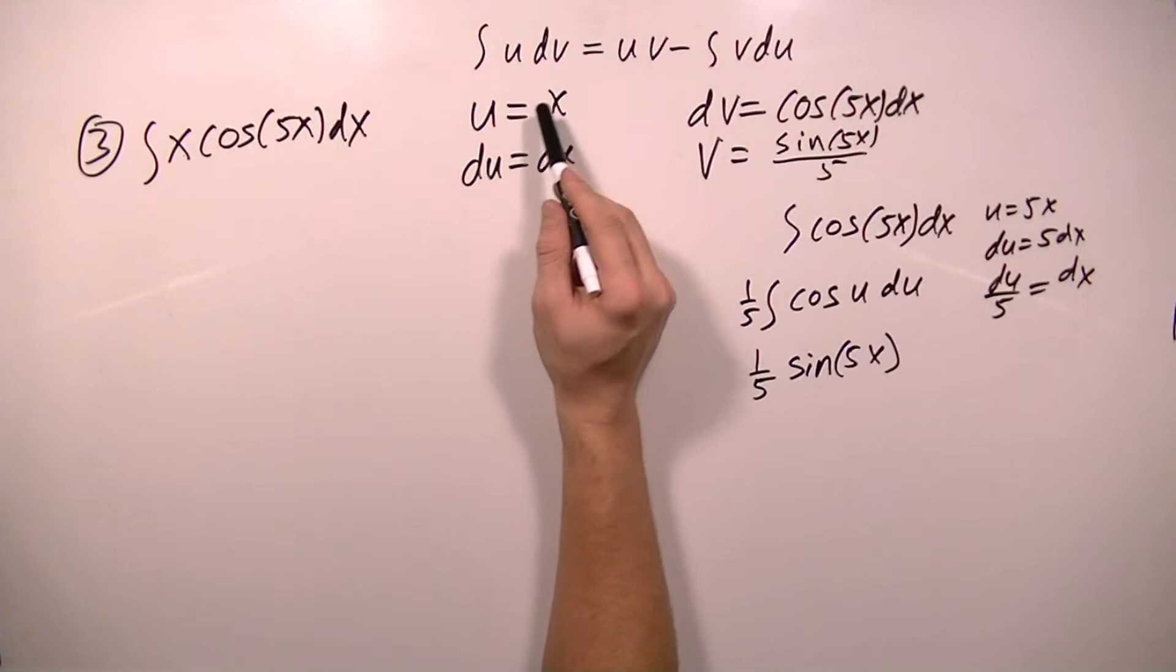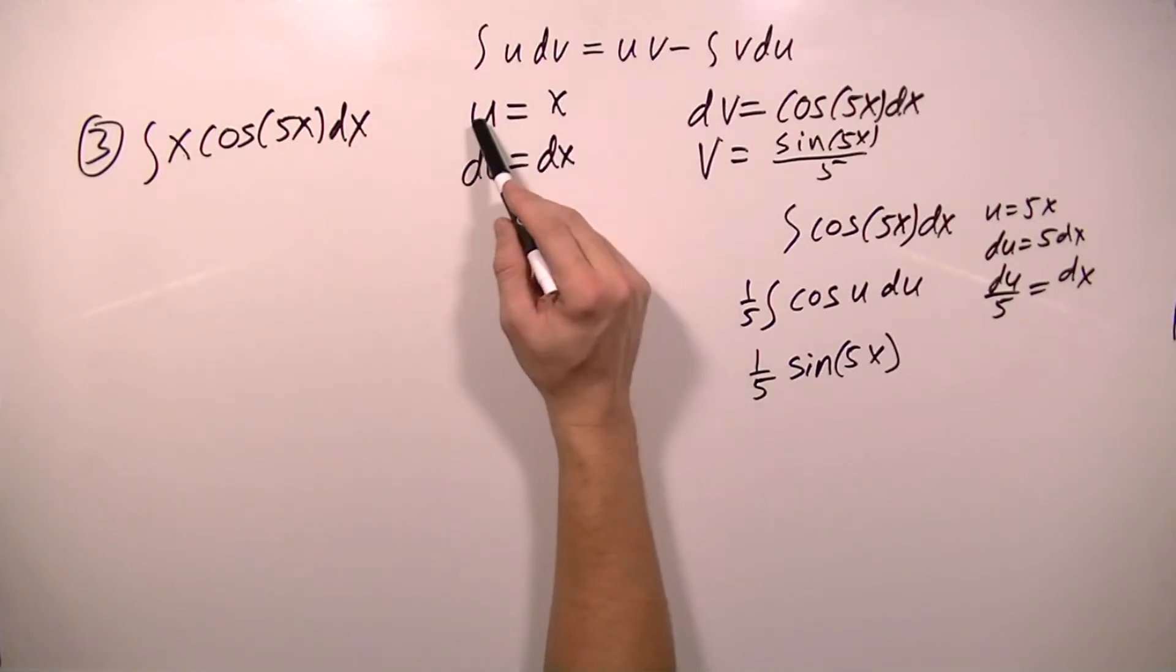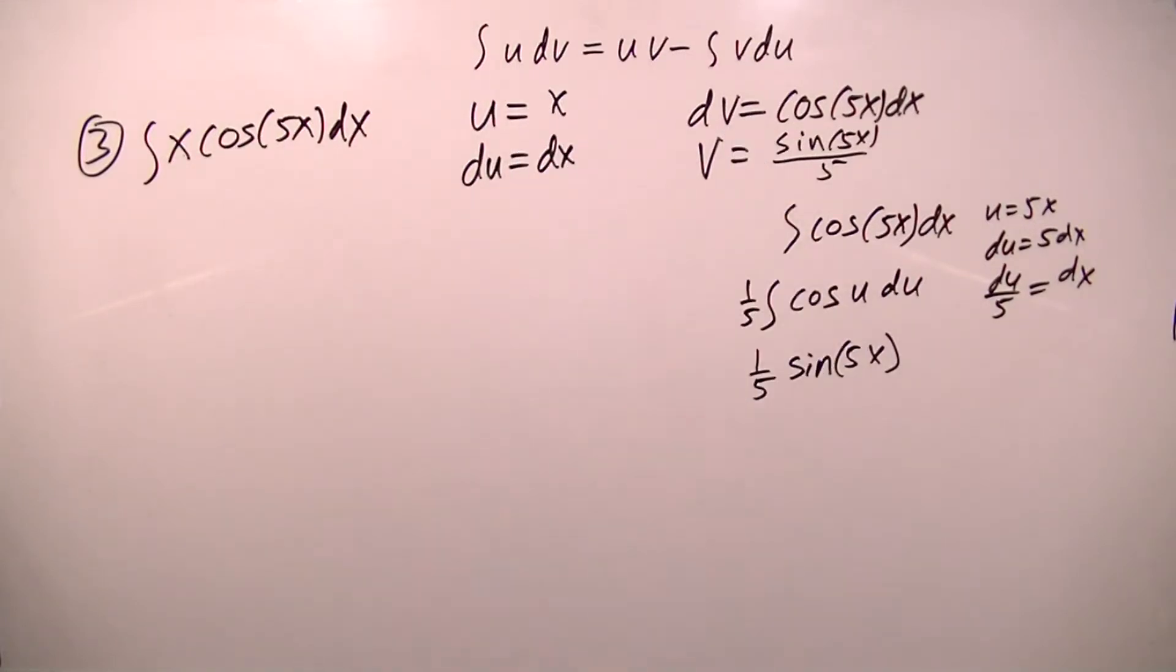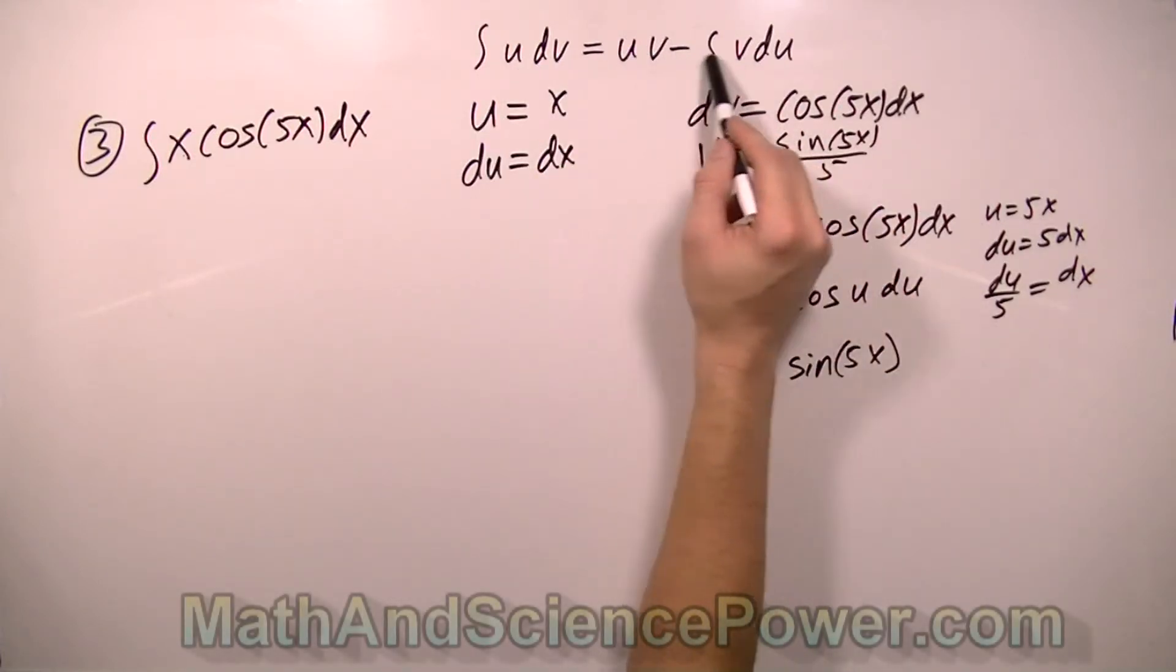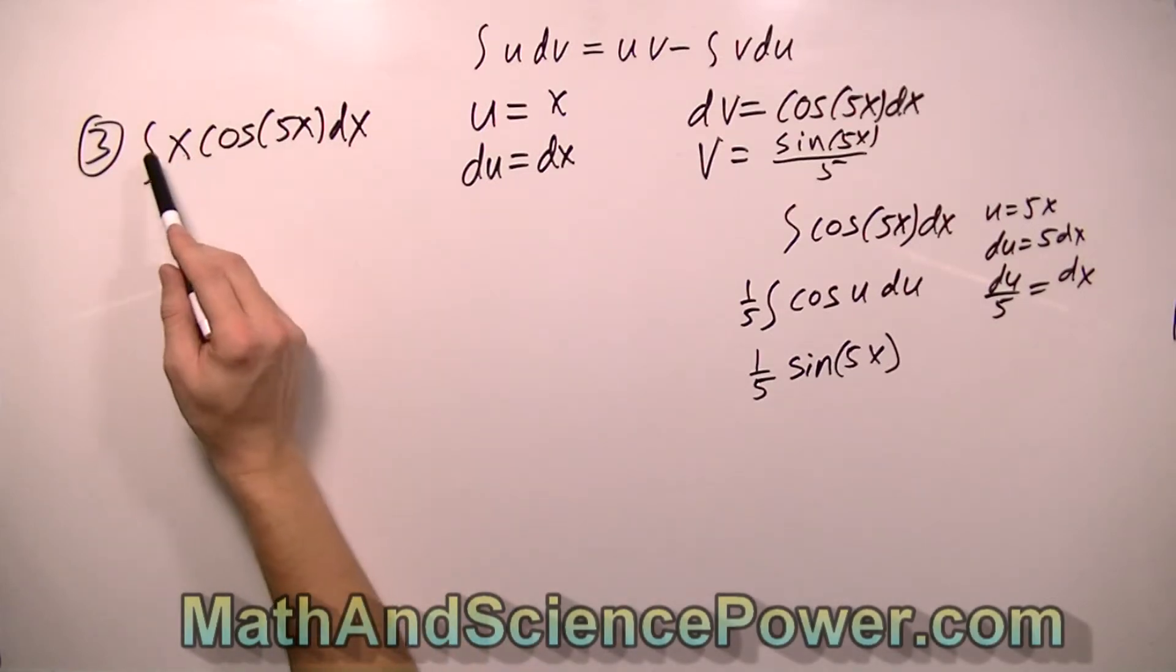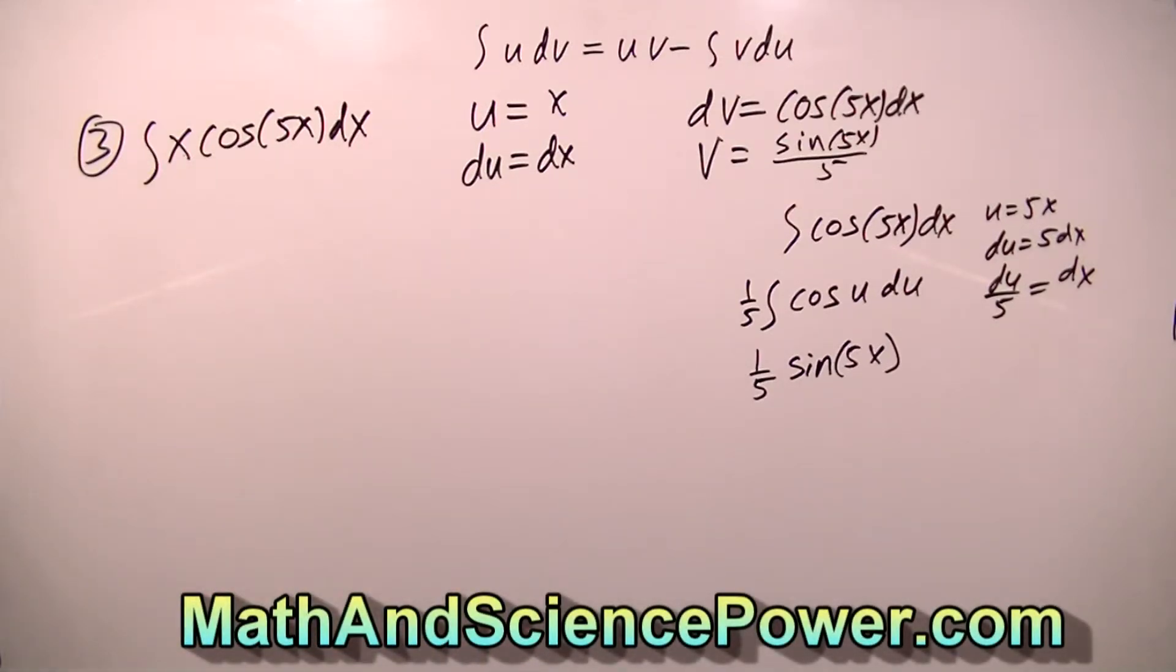So we've done the hard part, deciding which factor we want to set equal to u and which factor we want to set equal to dv. And we also found du and v. So take a moment and see if you can plug these values into this formula and see if you can find the answer to what is the integral of x cos 5x dx. And when we come back, we'll compare our answers, and I'll take you through the rest of the integral.